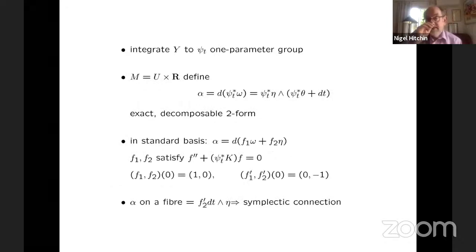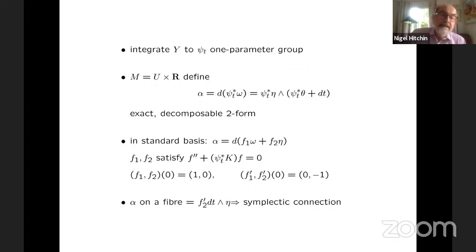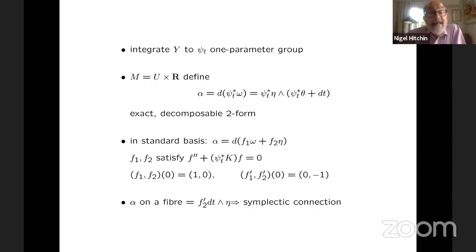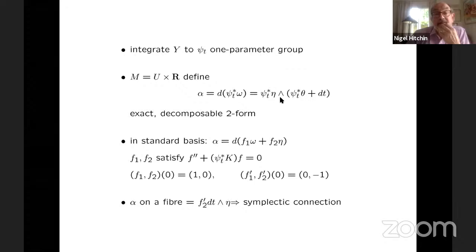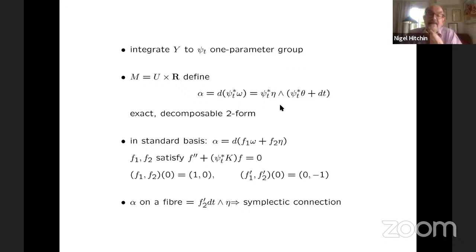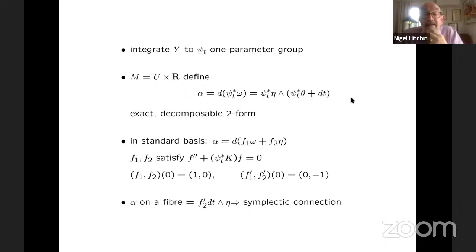So we want to construct out of this a four-manifold whose fiber is S¹ × ℝ. So you take this vector field Y and integrate it to a one-parameter group of diffeomorphisms, and then you pull back the one-form omega by this and take α to be D of this. And what you find is that written in terms of this basis omega, theta, eta, it looks like this. So what you see here is that it's exact and it's decomposable.